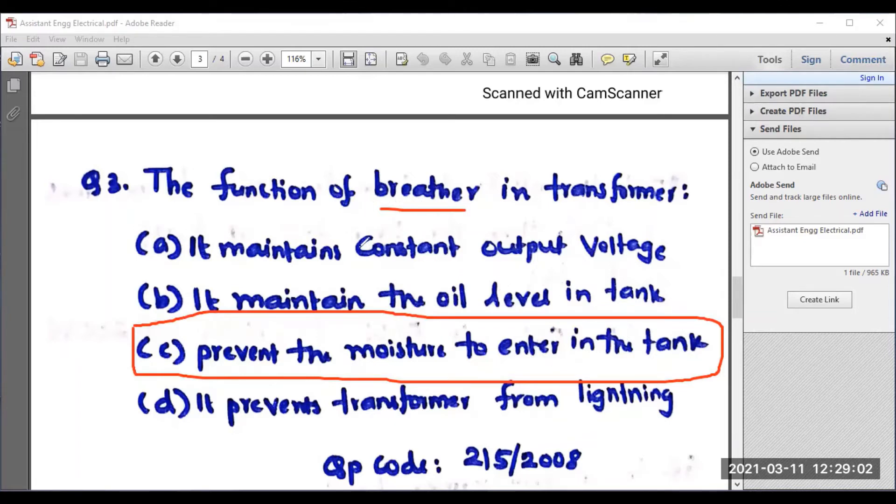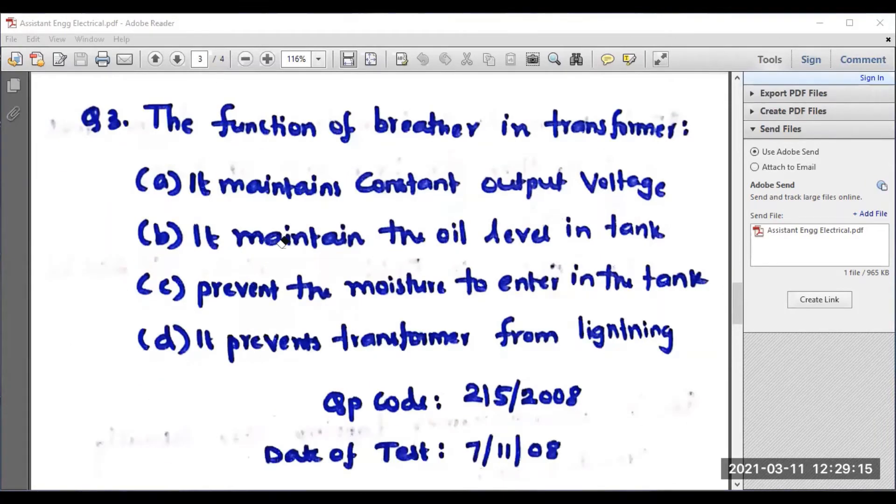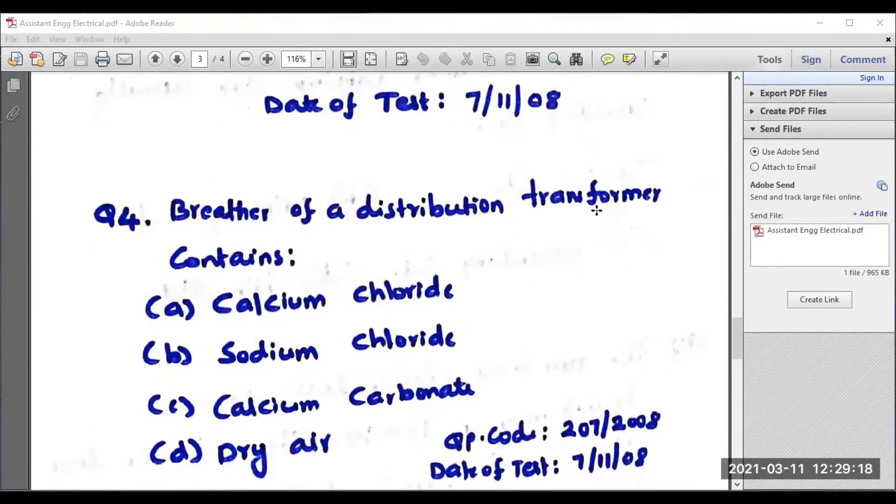That's the right answer for question number three. I would like to show you one more question related to transformer breather. Question number four: Breather of a distribution transformer contains calcium chloride, sodium chloride, calcium carbonate, or dry air. The right answer is calcium chloride, especially in distribution transformer. Option A is the right answer.